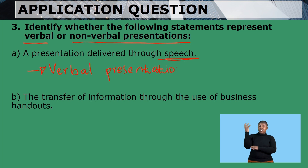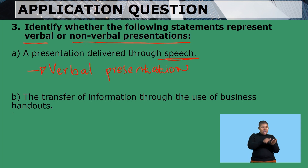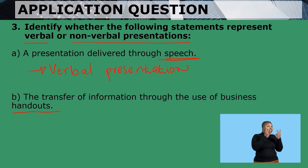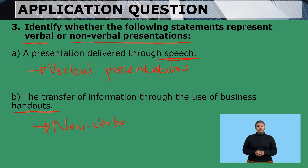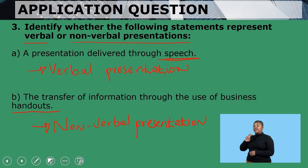And definitely the second one — since it's transferred through the use of handouts, handouts could be an example of a visual aid. So our answer here is non-verbal presentation. You can see how simple that is: verbal means speech; non-verbal means the message is received but you're not using your voice.